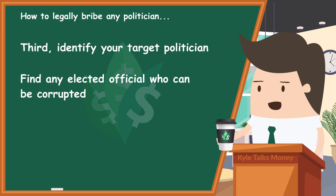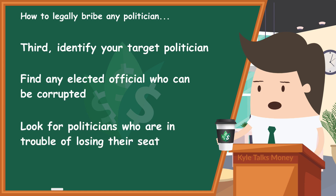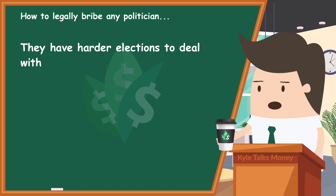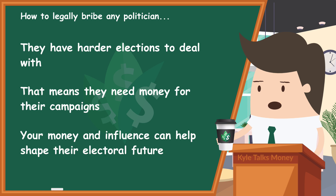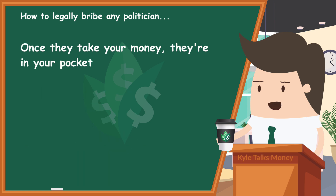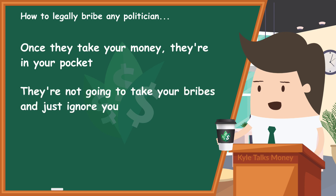Third, identify your target politician — whether it's a city council member, a congressman, or a mayor. Identify someone who is corruptible. Look for politicians who barely won their last election, those who have a high unfavorable rating, or someone who occupies a swing seat. These are politicians who have harder election fights, meaning they need money for their campaigns, and your money and influence can help shape their electoral future.